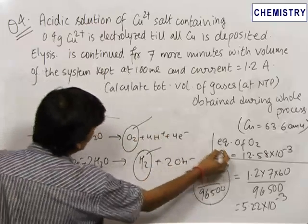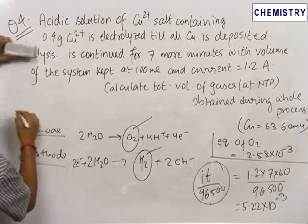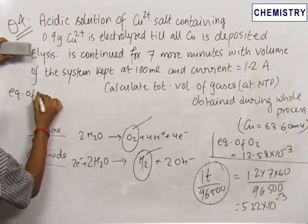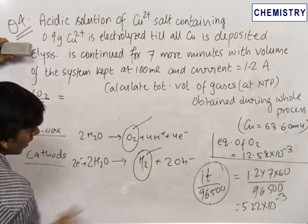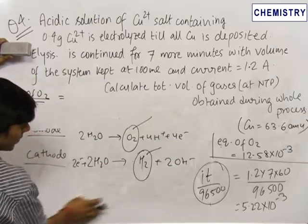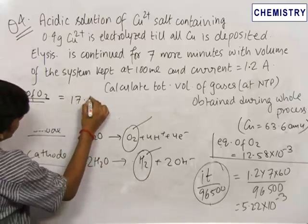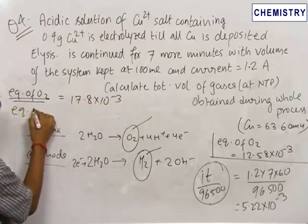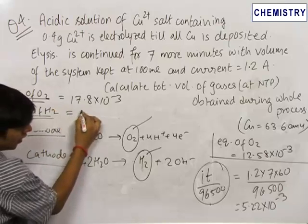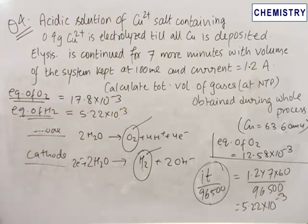O2 was also produced in the first electrolysis. Therefore, the total equivalents of O2 produced = 12.58 × 10⁻³ + 5.22 × 10⁻³ = 17.8 × 10⁻³. For hydrogen, the equivalents are equal to 5.22 × 10⁻³. Now we have the equivalents of both gases and need to find the total volume at NTP.